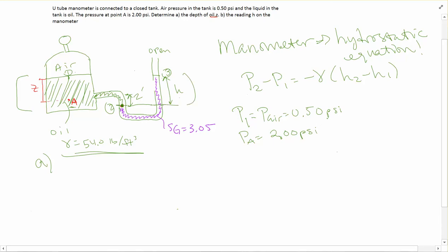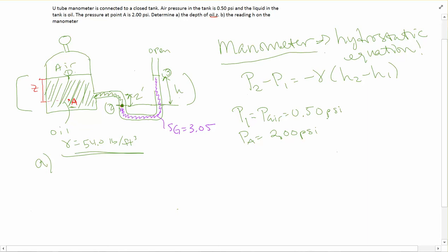Let's draw this line so it's easier to see where that is. For a manometer problem, we always go to our favorite hydrostatic equation. I've written that equation right here: P2 minus P1 equals negative gamma times (H2 minus H1). This gives us a relationship between the pressures and altitude, or depth.